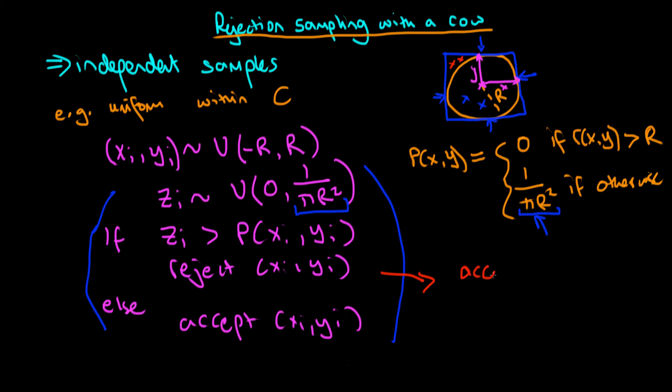We accept a point if the radial distance of xi and yi is less than r, otherwise we reject. And if we follow this algorithm that allows us to generate uniformly distributed samples within a circular boundary.